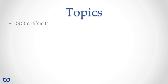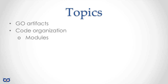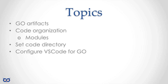For this lecture, we're going to be talking about Go artifacts — your Go source files, packages, and executables, and we'll talk about how you get those. We'll also talk about code organization, which is important because we now have Go modules, which is a lot better and gives us a lot of flexibility. We'll also talk about setting up your code directory, how to configure Visual Studio Code, and optionally, configuring Git.